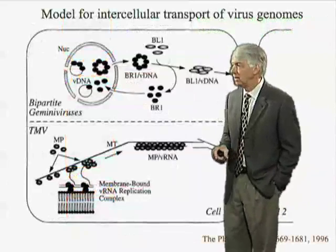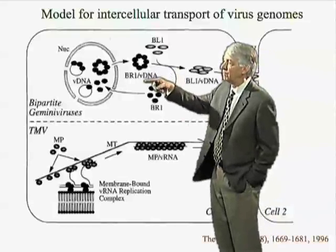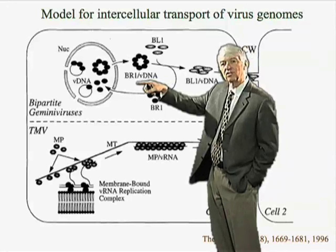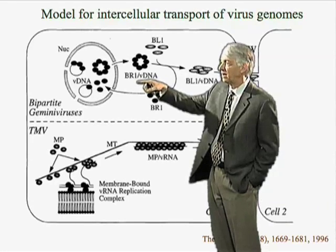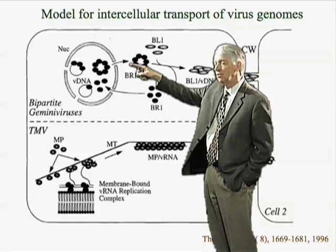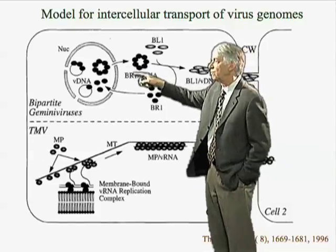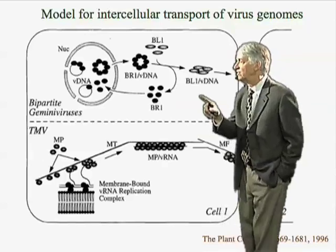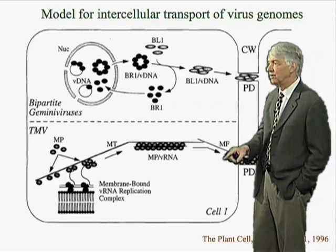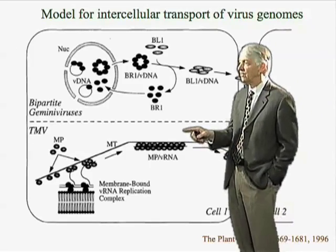Different viruses do it in different ways. In this diagram, we've shown how a set of viruses called Gemini viruses move from cell to cell. These are single-stranded DNA viruses that replicate in the nucleus. One of the proteins encoded by the virus moves it from the nucleus to the cytosol, and then another protein carries it all the way through the plasmodesmata. Tobacco mosaic virus, by contrast, does it in a very different way — there's an interaction between the movement protein, membranes, and the cytoskeleton, which carry these structures to and through the plasmodesmata.